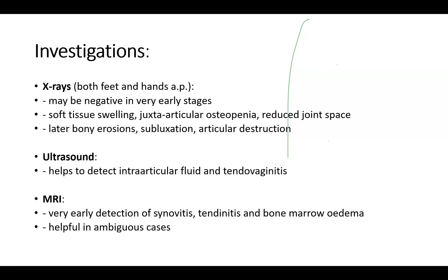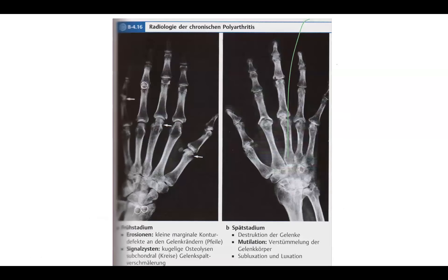Here are some X-rays. This is an early stage — here you see the extra-articular osteoporosis. Sometimes if you look exactly at the picture you don't see it; hold the film a little further away and you can easily see osteoporosis near the joints and normal bone elsewhere. Here osteoporosis again near the joints, and here you can see those little erosions where the arrows are. This is clearly not normal — little nibbles away here and here as well. This is more late stage.